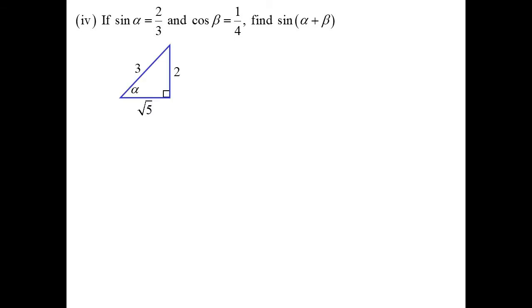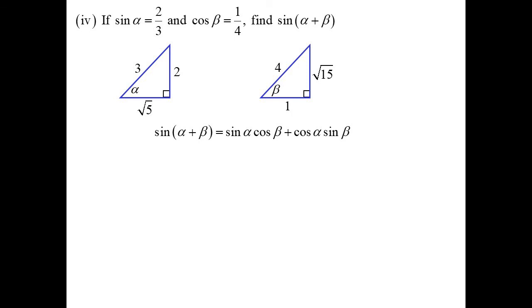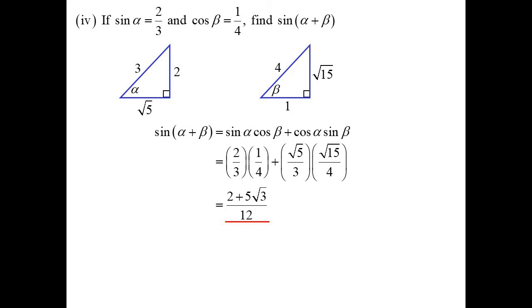Given sin α = 2/3 and cos β = 1/4, find sin(α + β). We don't need to find the actual angles — instead, draw a triangle for each. For alpha, sine = opposite/hypotenuse = 2/3, so Pythagoras gives the third side as √5. For beta, cosine = adjacent/hypotenuse = 1/4, so Pythagoras gives opposite = √15. Substituting into sin(α + β) = sin α cos β + cos α sin β, reading off the triangles, and combining over a common denominator of 12, we get (2 + 5√3) / 12.